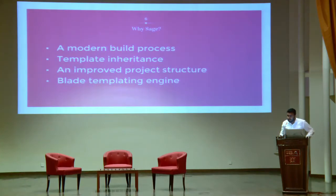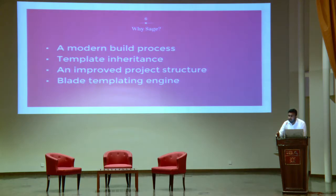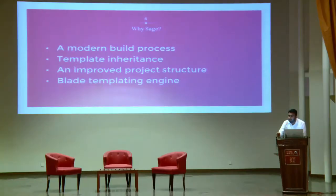Why do we use Sage? Why not Understrap or Underscores? In Underscores, there is no modern development workflow — it's just a standard WordPress theme. But in Sage there is a modern WordPress workflow: a modern build process, template inheritance, and an improved project structure with the Blade template engine. Sage previously had no modern workflow; after major updates its name changed from Roots. Grunt was introduced as the modern workflow in Sage 6, changed to Gulp in Sage 7, and in Sage 8 it was renamed Roots to Gulp.